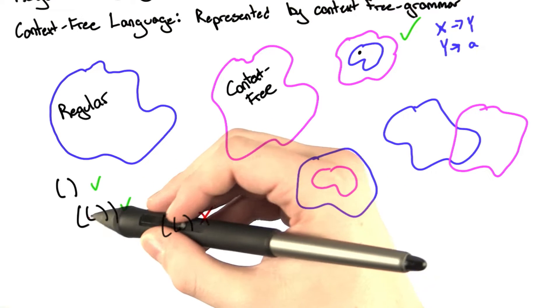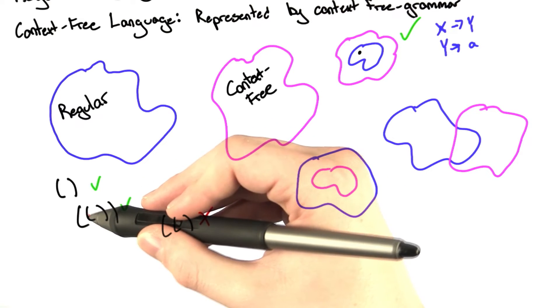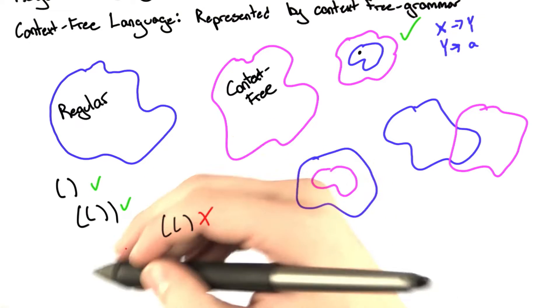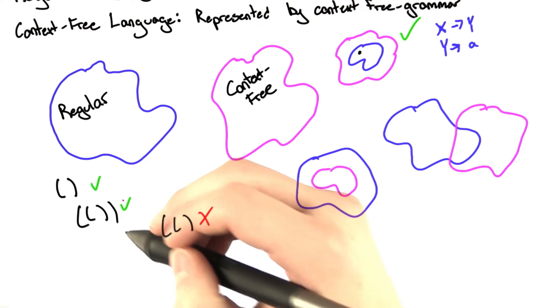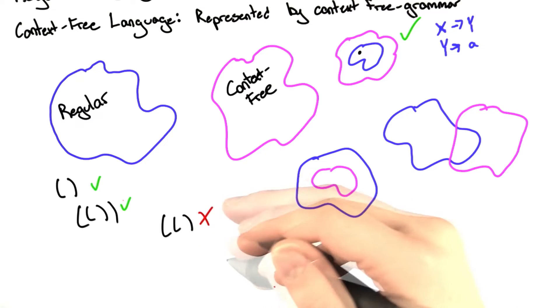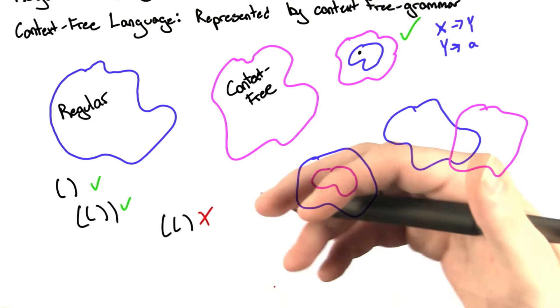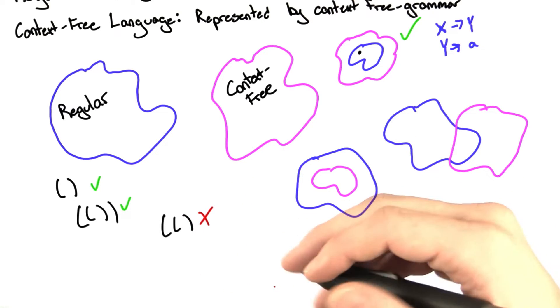That's because you can't count how many times you see a left parentheses, and then require that you see exactly that many right parentheses. There's just no form of counting in a regular expression. You can't hold that much state.